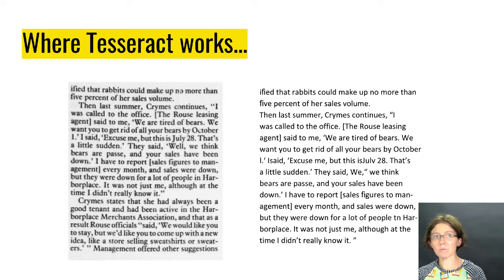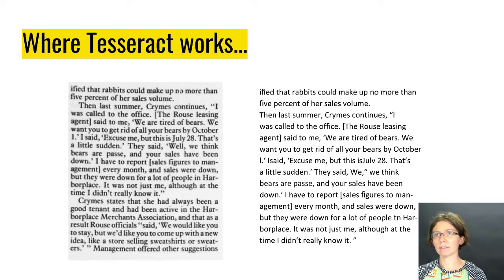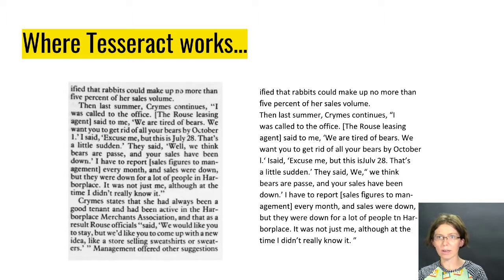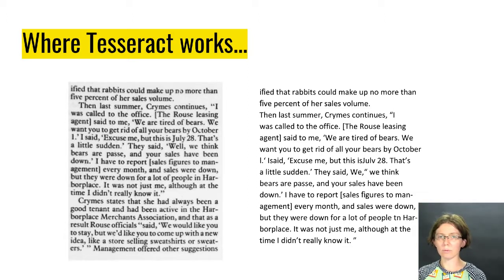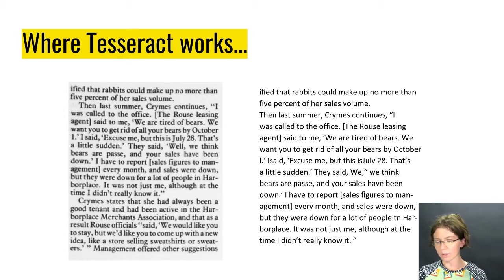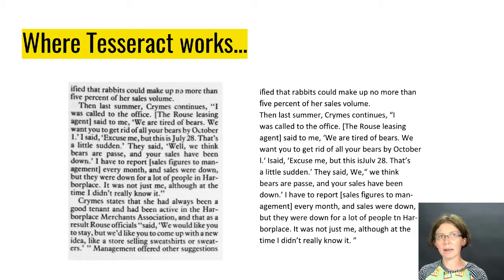Tesseract sometimes can work really well. Here's an example of a newspaper document with fairly clear text. There are a few errors — you can see July 28 in the middle of the document didn't quite come out right — but for the most part everything is here. The text doesn't reflow the way it does in Adobe or Adobe FineReader, where hyphens at the end of a column would need to be edited out to merge words together, but it does get all of the text.